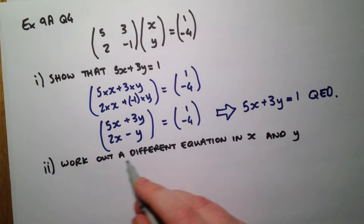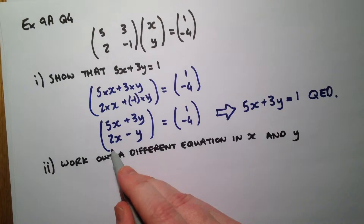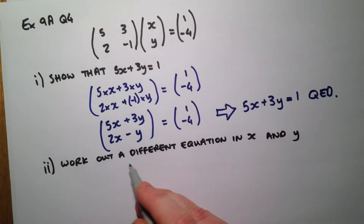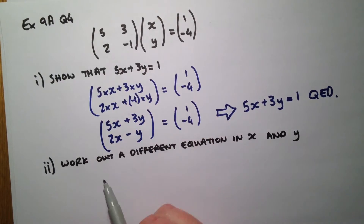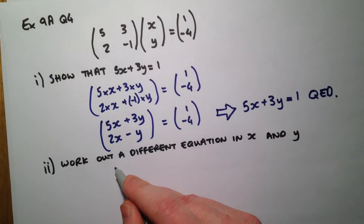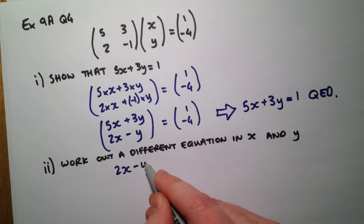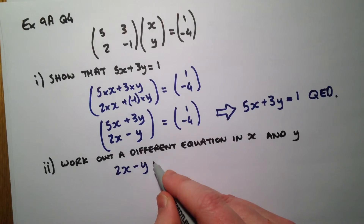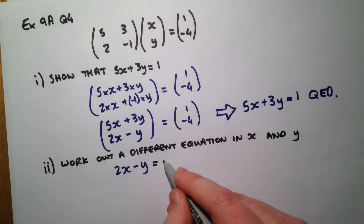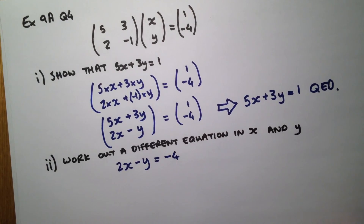Part 2 of this question says work out a different equation in x and y. Looking back at our equation, what we would have done in the previous questions is write an equation with the bottom of our matrices. So there we are — there's a different equation in x and y.